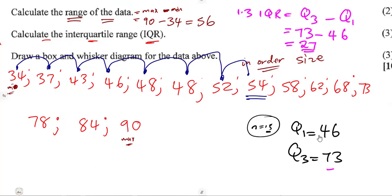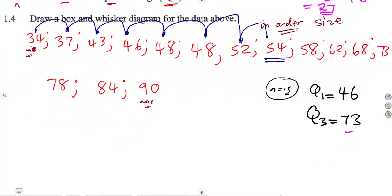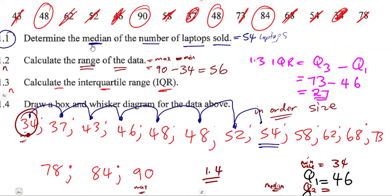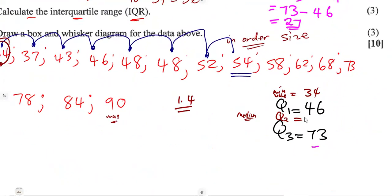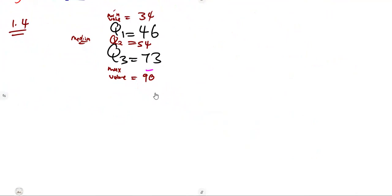The last part, for three marks, is to draw a box and whisker diagram. To do this we need the five-number summary: the minimum value is 34, Q1 is 46, the median (Q2) is 54, Q3 is 73, and the maximum value is 90.